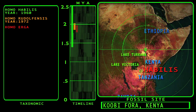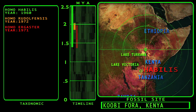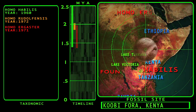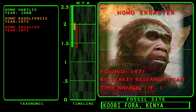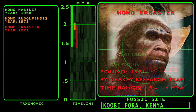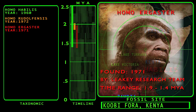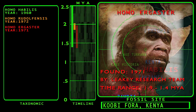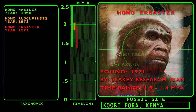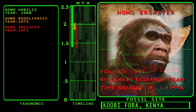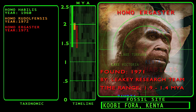Next on our timeline, we encounter Homo ergaster. The designation of ergaster as a species is a point of debate among paleoanthropologists. There is a school of thought that ergaster is just a variation of Homo erectus. Others feel ergaster fossils vary enough from later fossils of erectus, especially those discovered outside of Africa, that it warrants ergaster being designated as a separate species.